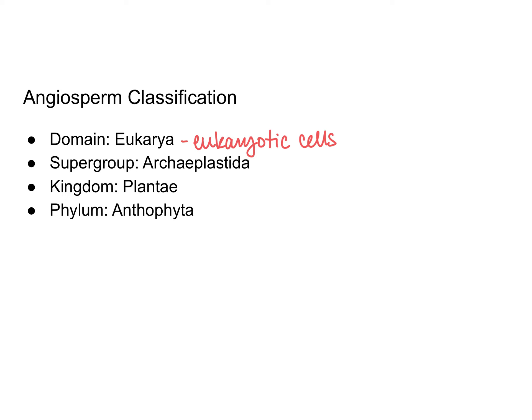If you recall, we have talked about two other domains — domain Bacteria and domain Archaea — and so now we're talking about domain Eukarya. Plants in general are in the supergroup Archieplastida. Remember that this also includes the protists, and more specifically the red and green algae.